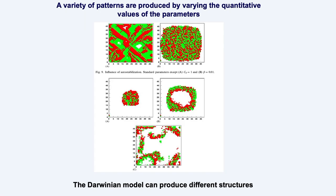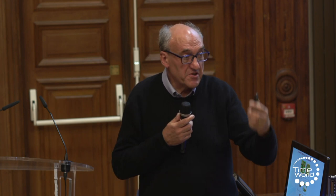We first ran the model by varying the quantitative values of the parameters. As you can see on the slide, we observed several shapes and cellular patterns: masses of interspersed red and green cells, alternating larger areas of red and green cells, even rings of cells. These patterns and shapes were constant and reproducible as long as the parameter values of the model were kept constant.